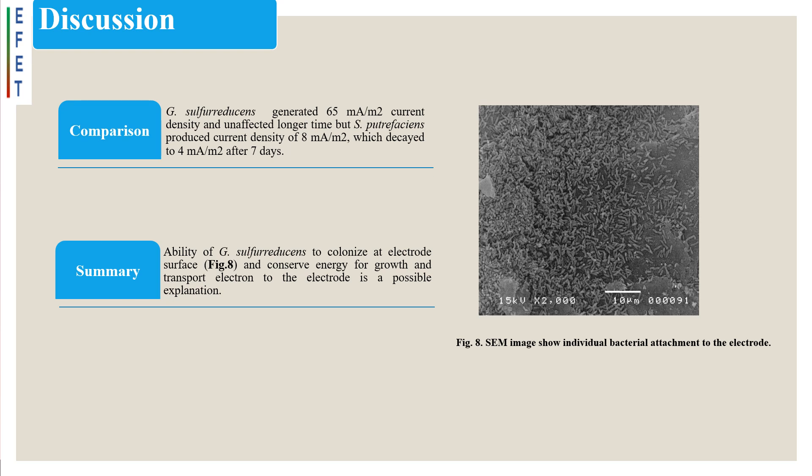Summary of the discussion: The ability of Geobacter sulfereducens to colonize at the electrode surface and conserve energy for growth and transport electrons to the electrode is a possible explanation.